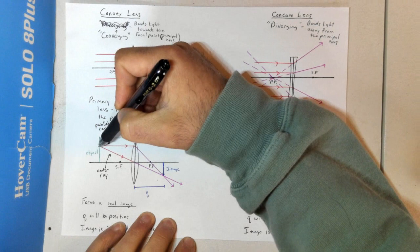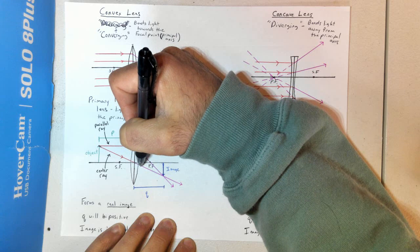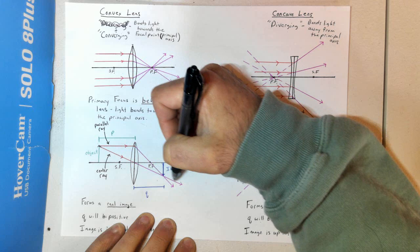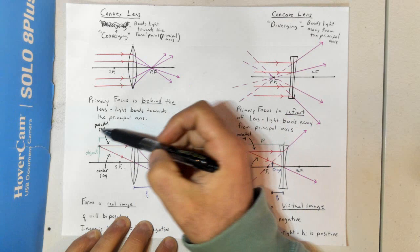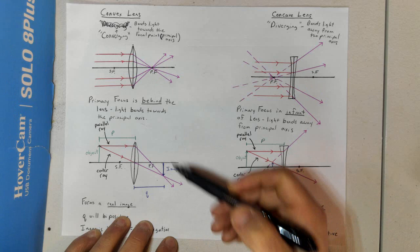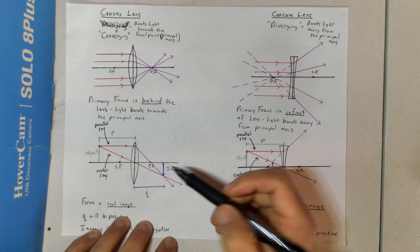The second ray goes through the center of the lens — what we call our center ray. All rays that go straight through the center of the lens are not going to be bent or refracted at all; they just continue straight. Our center ray and our parallel ray together help form an image. The parallel ray bends through the primary focus, and where these two meet is where our image forms.